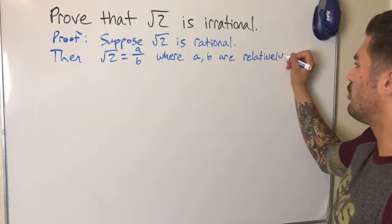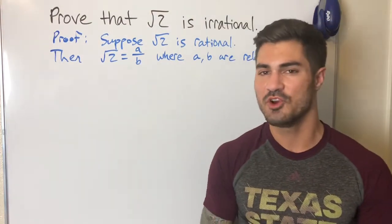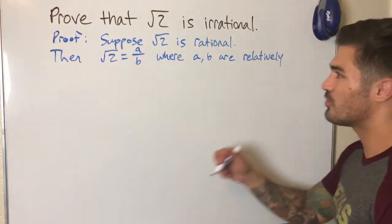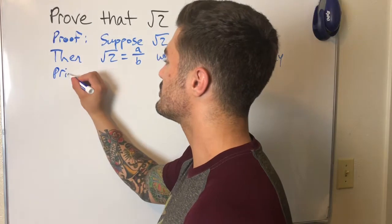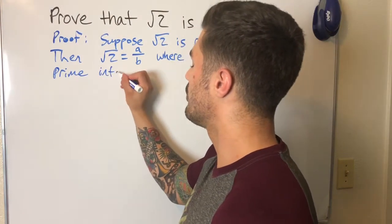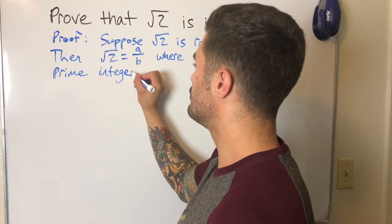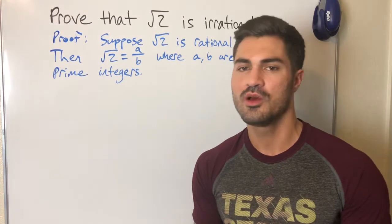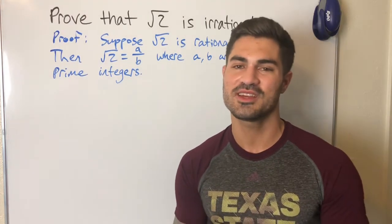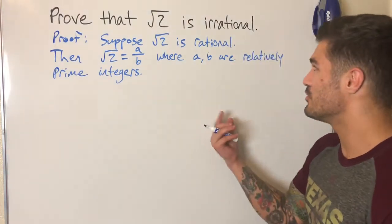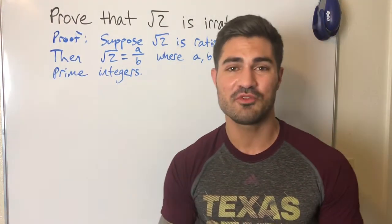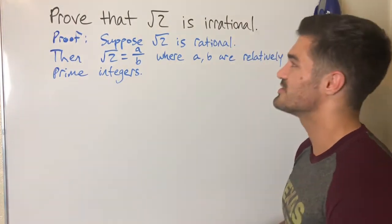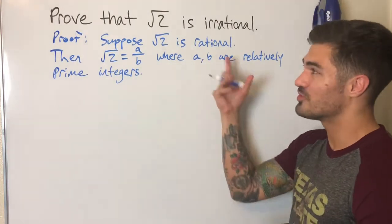Relatively prime just means their only common factor is 1 — they have no other factors between the two, so this is a fully simplified fraction. You might think, what about something like 8 over 2? That's a rational number and they share a common factor of 2, but that simplifies down to 4 over 1. Every rational number can be expressed as a ratio of relatively prime integers.